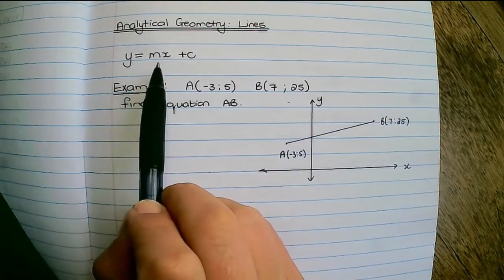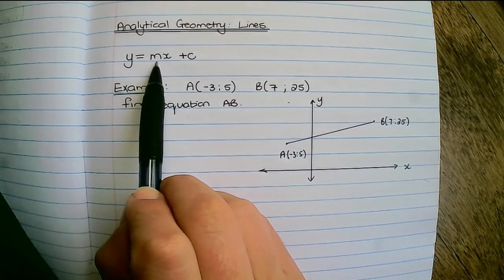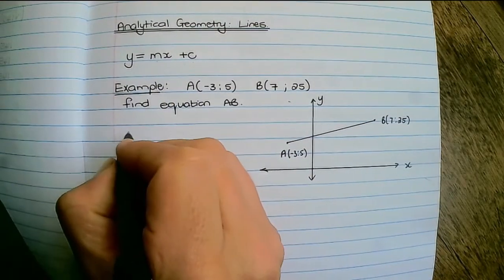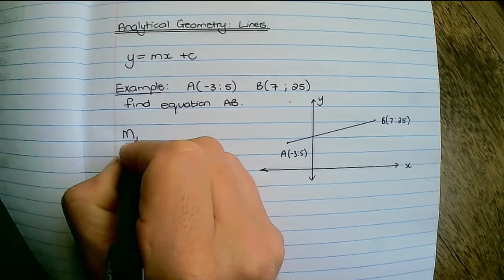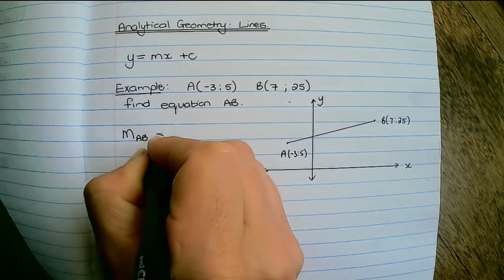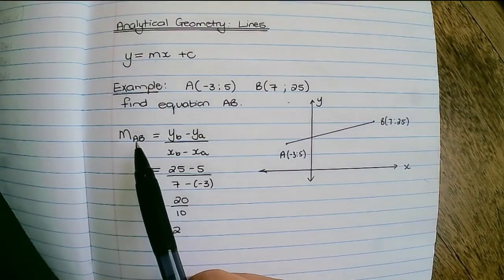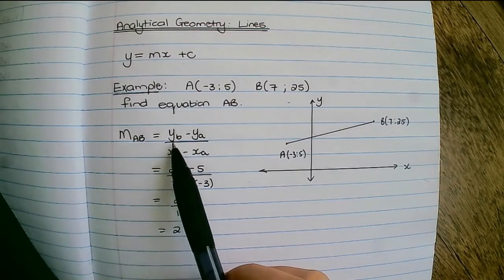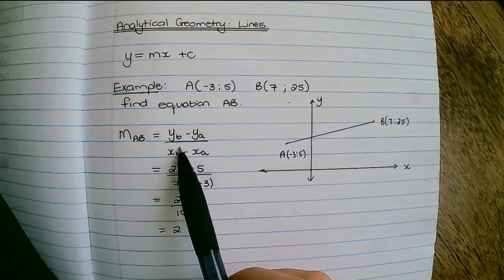Remember we are trying to find the gradient and the y-intercept. So first off let's find the gradient between points A and B. The gradient between point A and B is the difference in y's over the difference in x's.